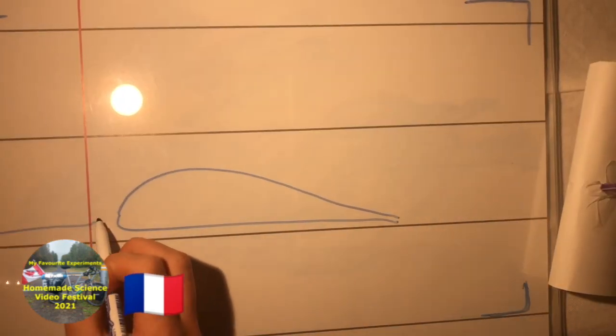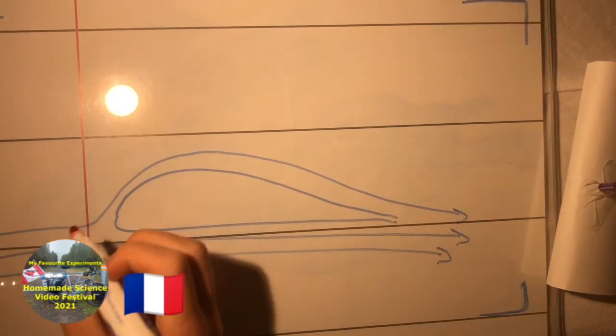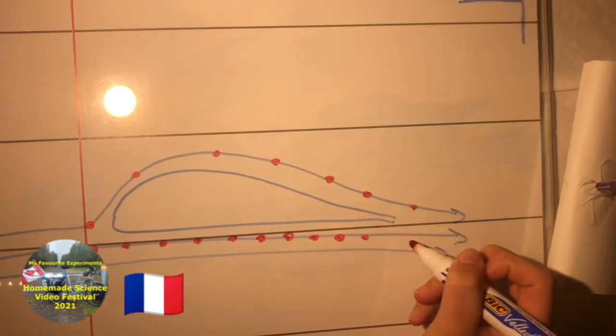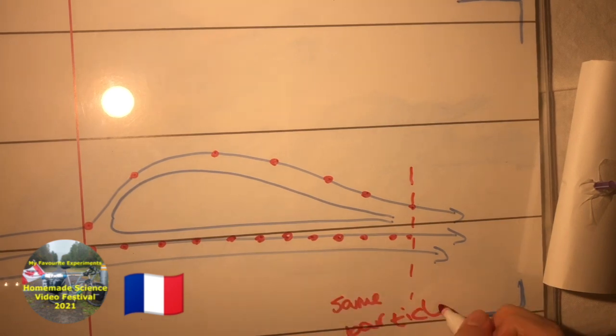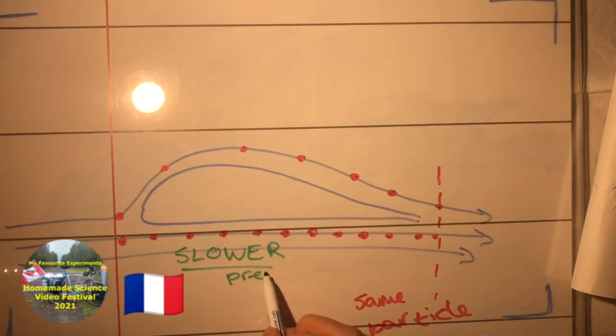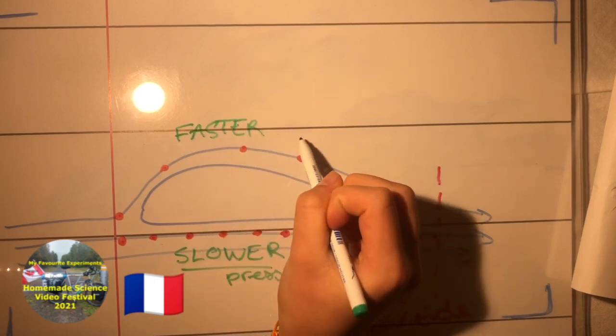What people used to believe was that as two air particles travelling next to each other split at the front of the wing, they would meet at the same time on the other end of the wing. And because the top particle needs to travel a longer distance than the bottom one, it has to go faster in order to meet the other particle that it was travelling along with at the end of the wing.